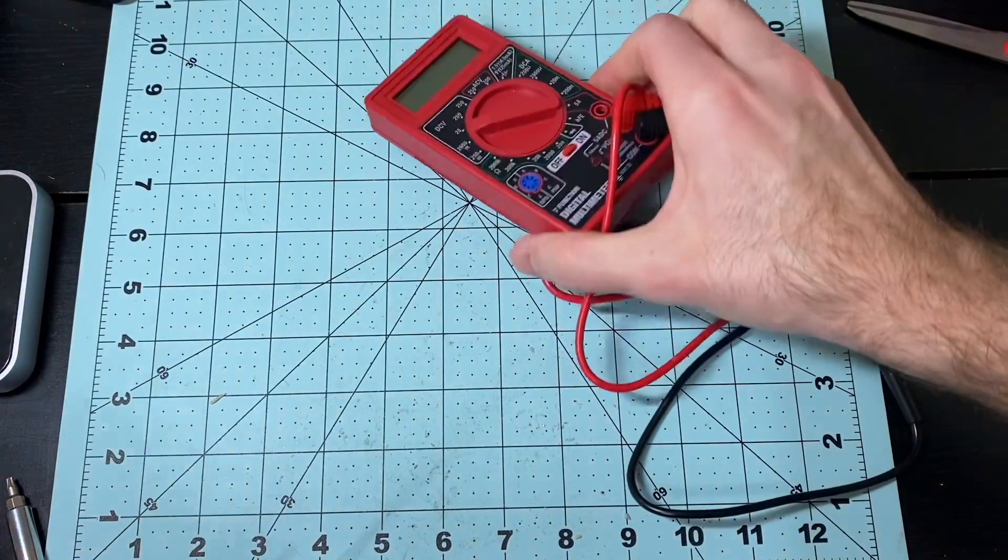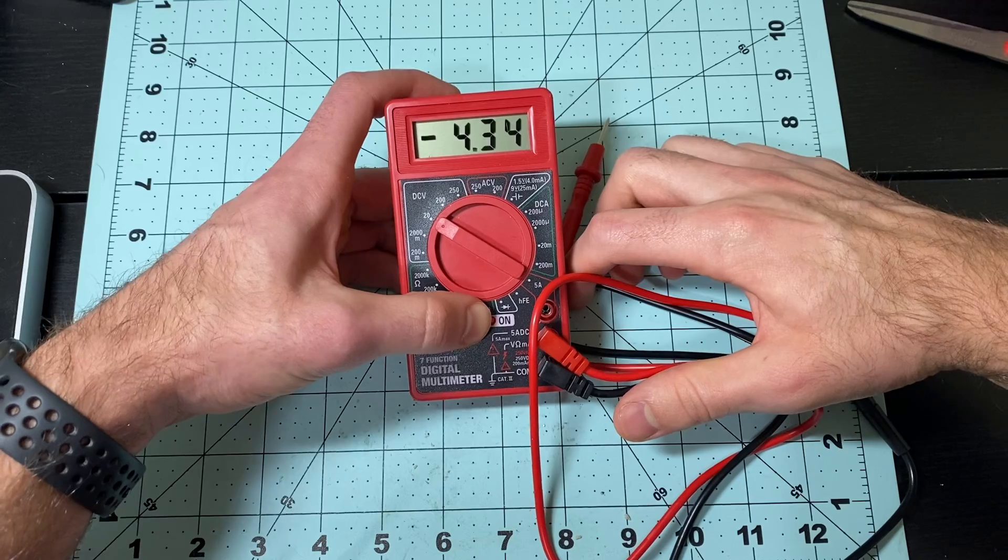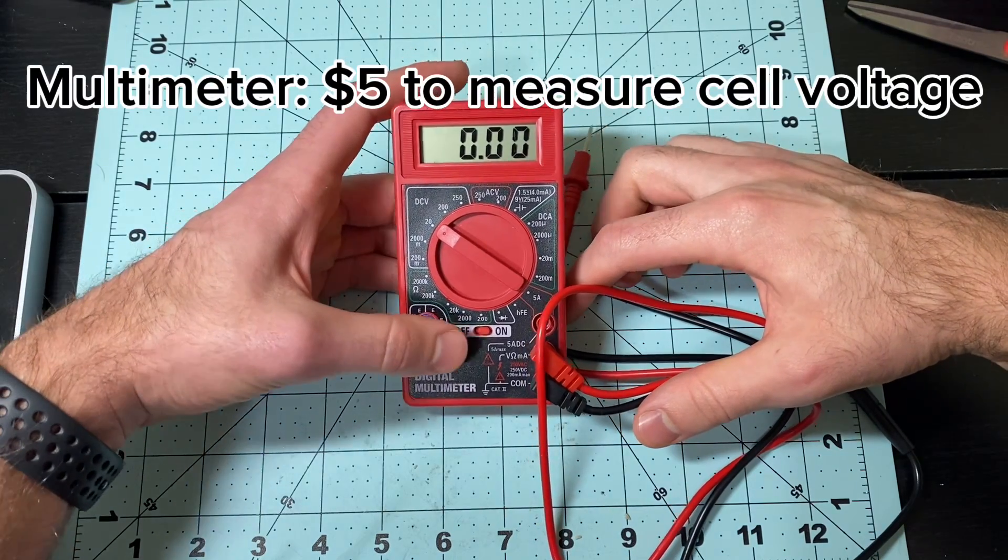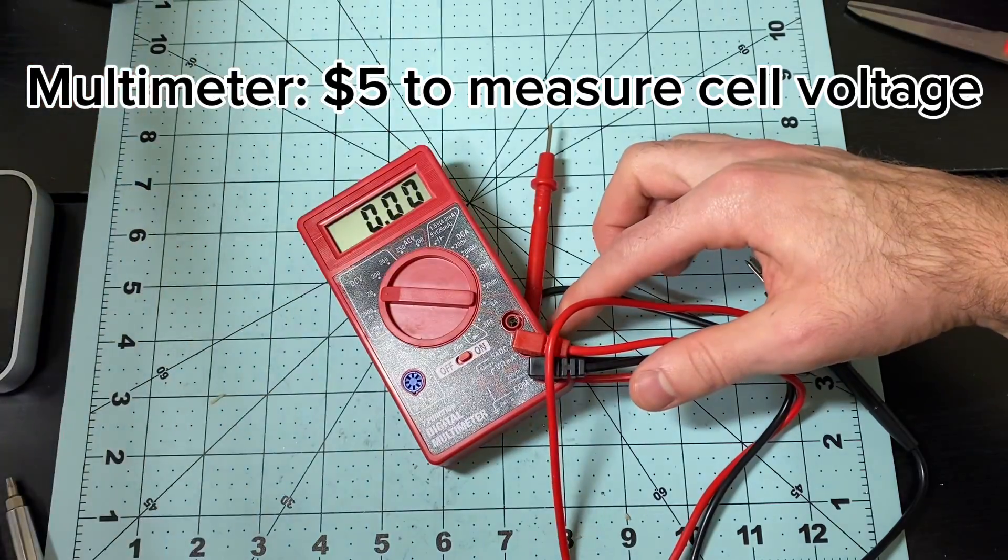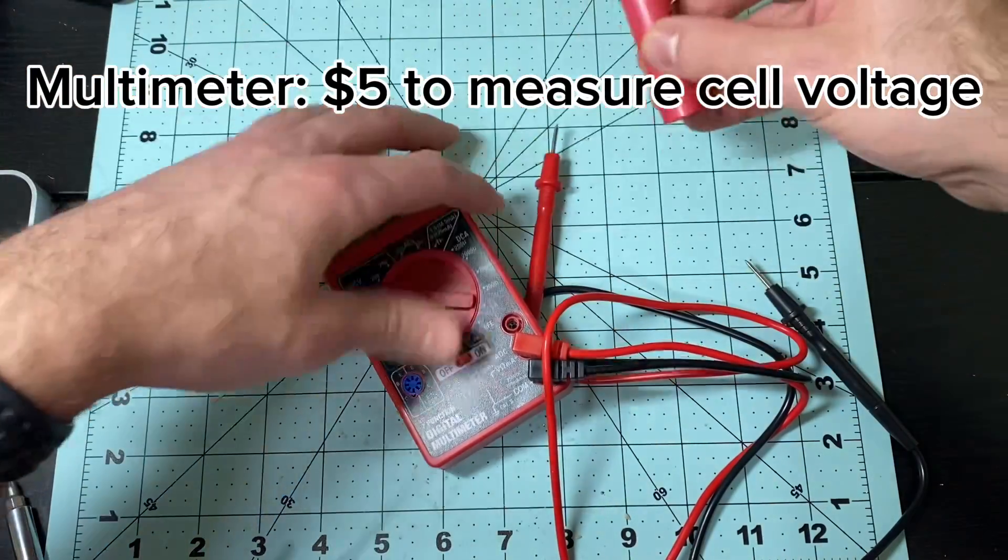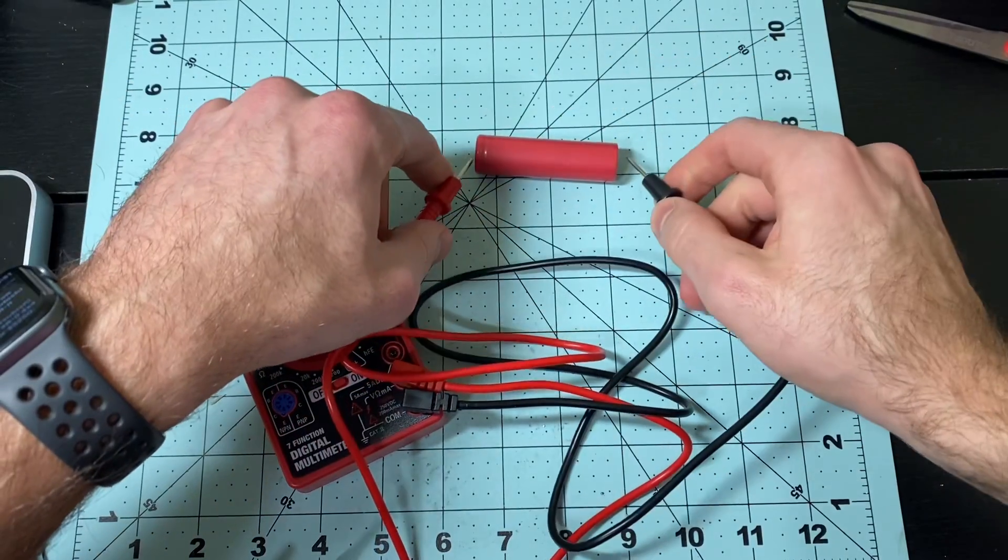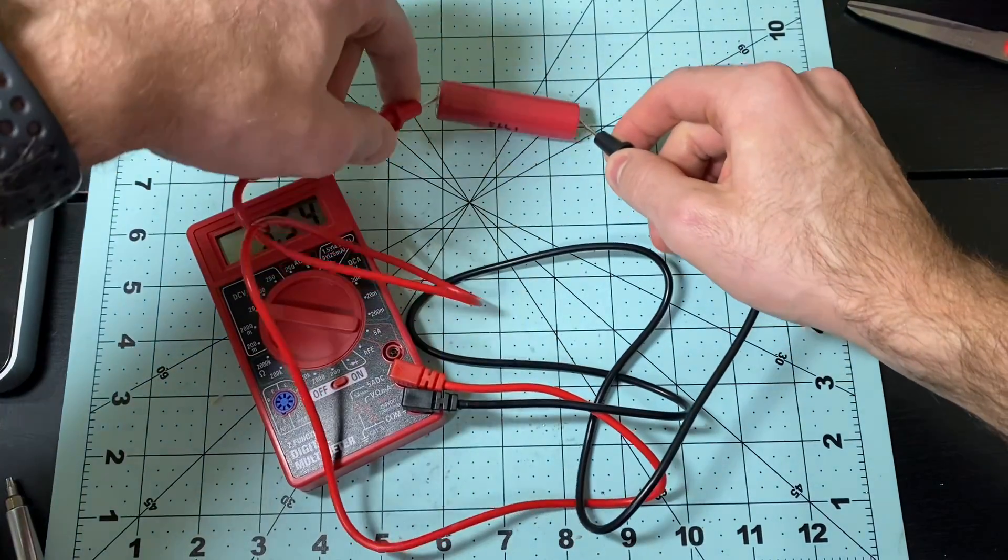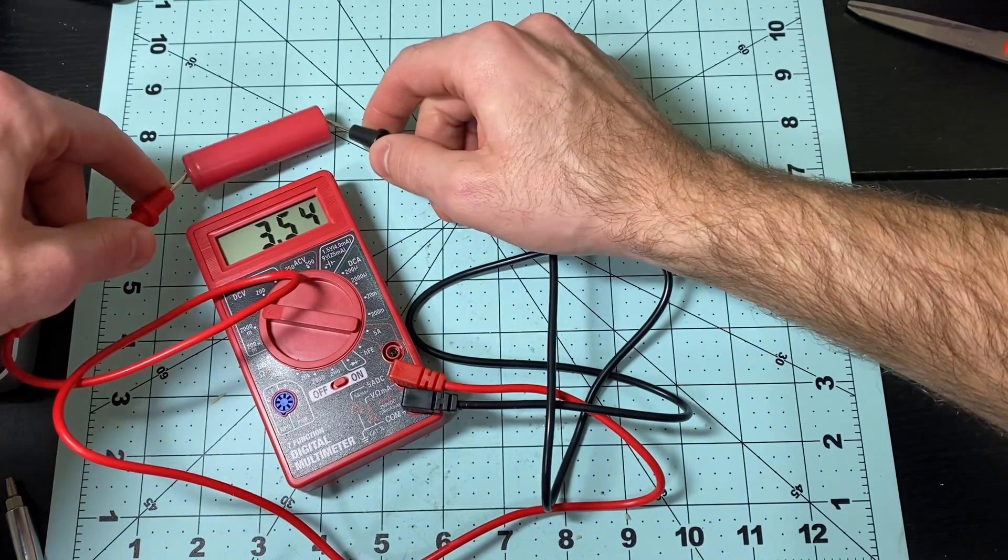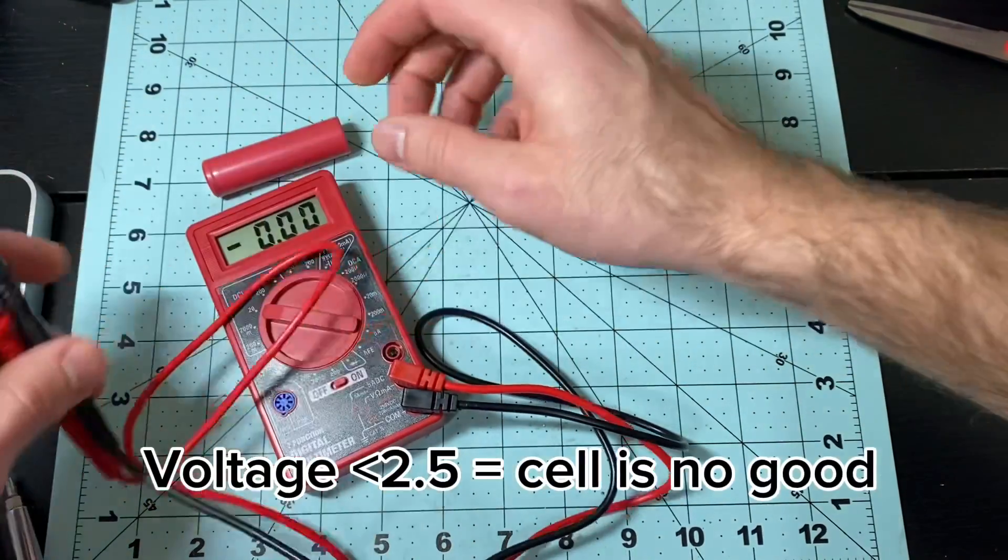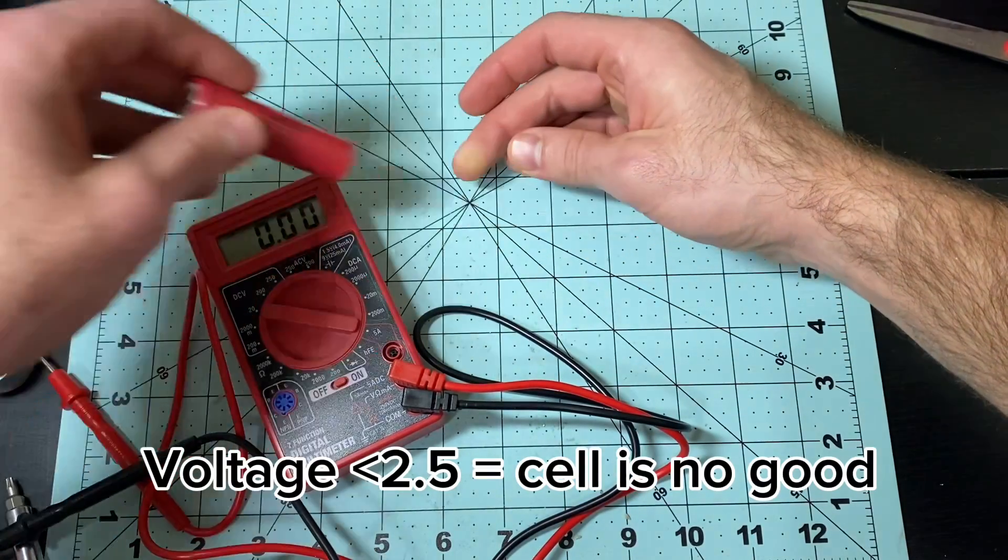Next I like to have a multimeter. This will test the voltage of your batteries so you can know if the cells are even worth testing. I'll show you here we have a cell. Tested 3.54 volts. So if a cell is under two and a half, for this purpose it's not even worth charging up because it's been damaged.